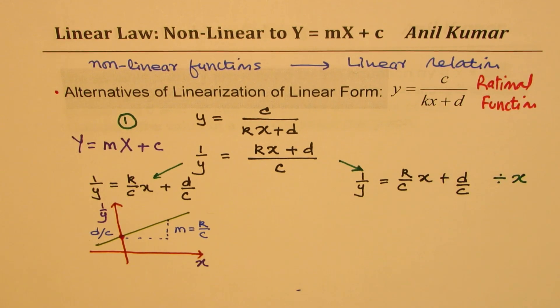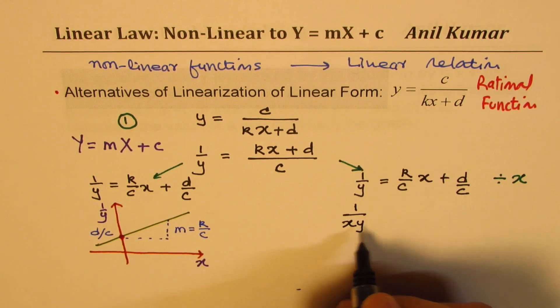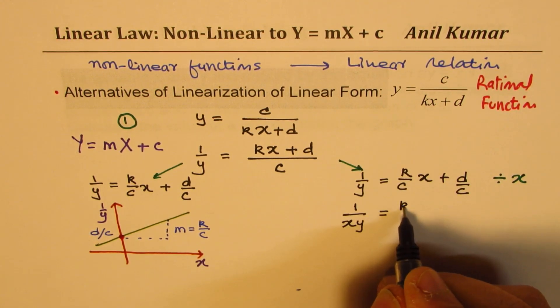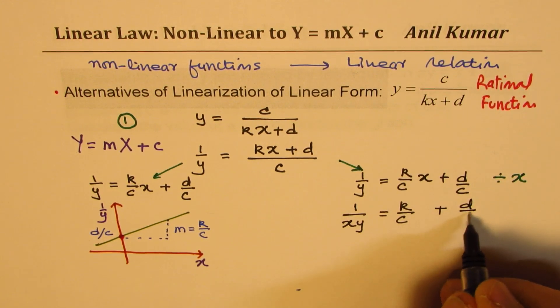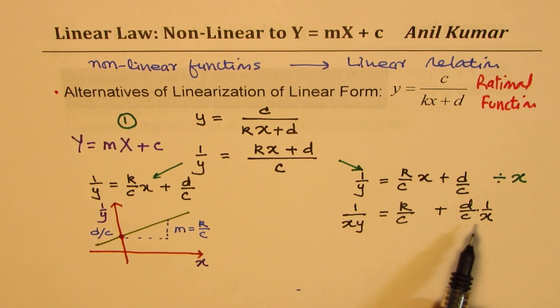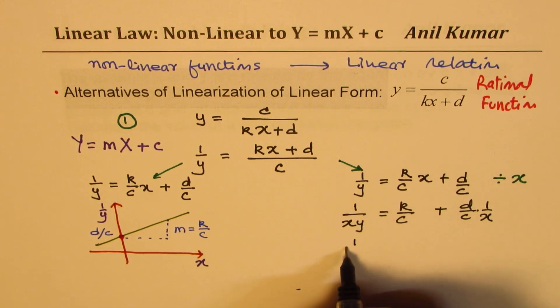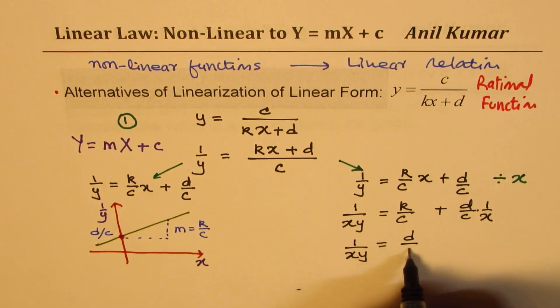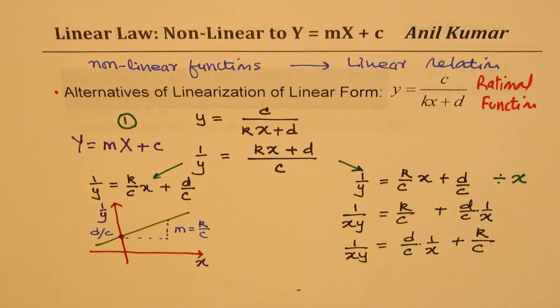So, if I divide by x, all the terms here, I get one over xy equals to constant k over c, that x cancels, plus d over c times one over x. Now, this is another way. Let me rearrange this. So, we have one over xy equals to, the gradient is now d over c, and one over x plus k over c.